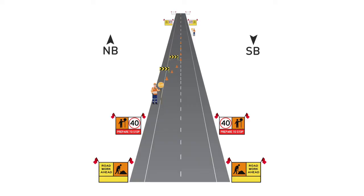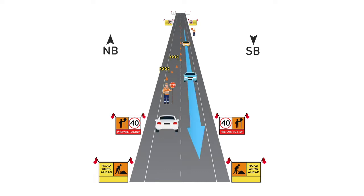Shuttle flow turns two-way traffic into alternating one-way traffic by closing one or more lanes. To do this, you need to take the following steps.